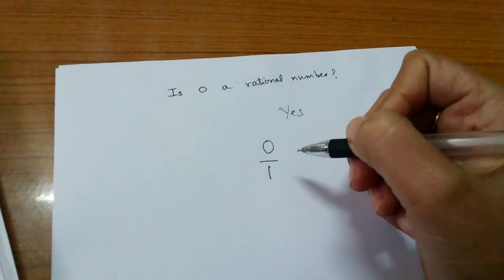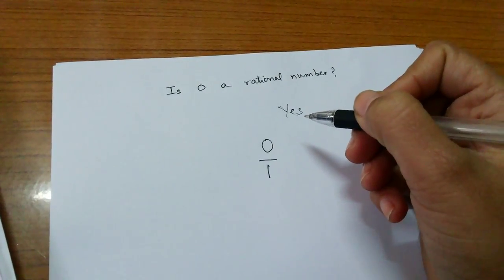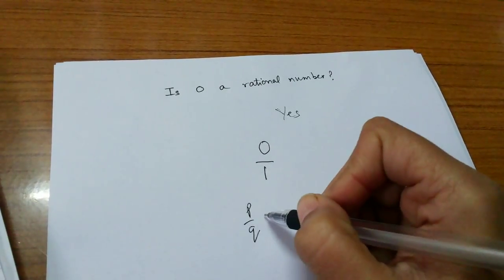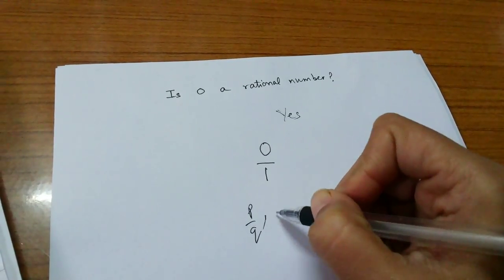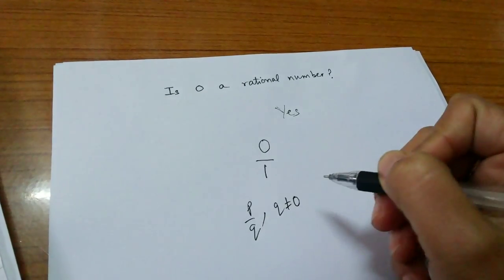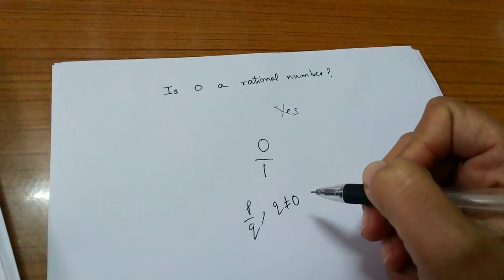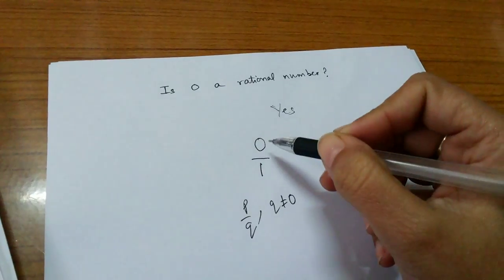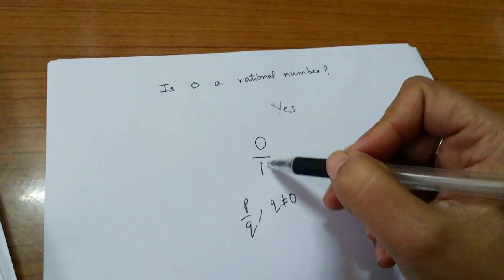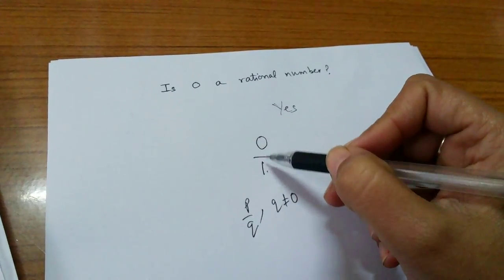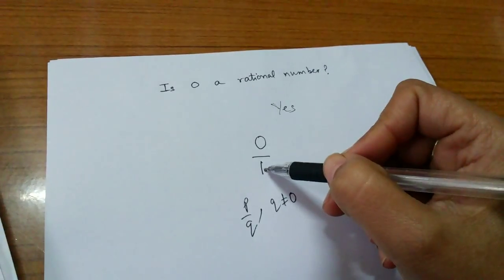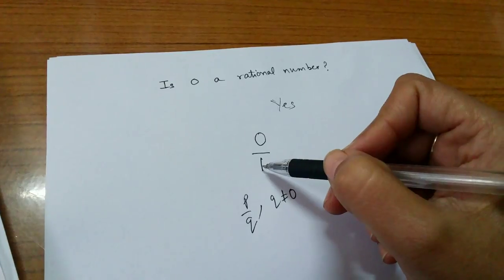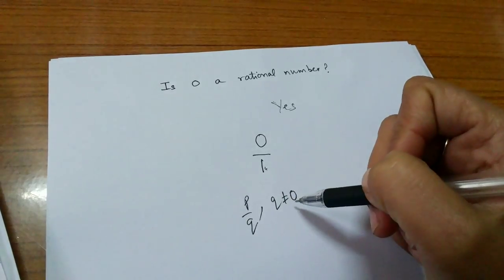Now, what is a rational number? A number which can be expressed in the form P by Q, where P and Q are integers and Q is not equal to 0. Now, see this definition is applied in 0 divided by 1. Both 0 and 1 are integers and the denominator 1 is not equal to 0.